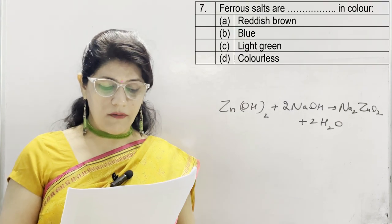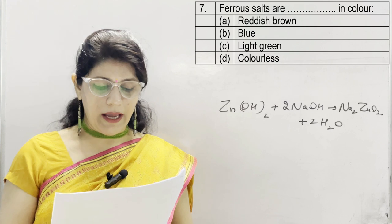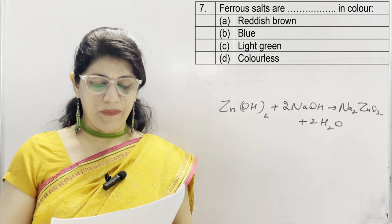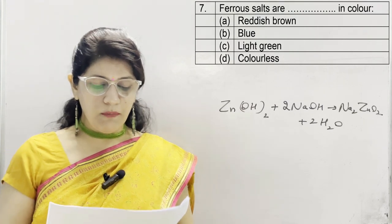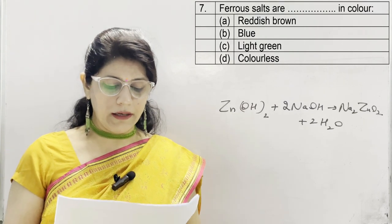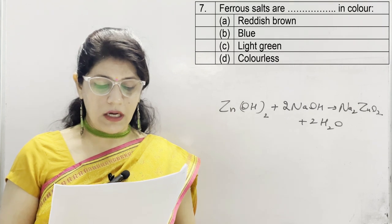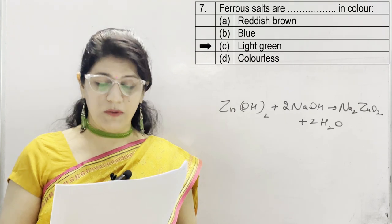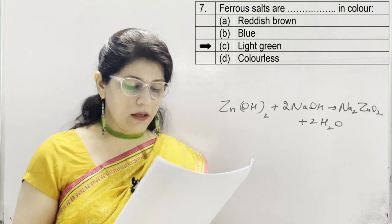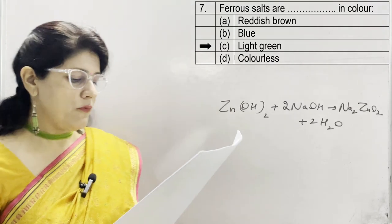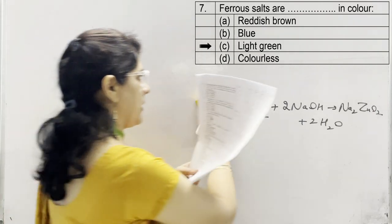In question 7, ferrous salts are dash in color. Options: A reddish brown, B blue, C light green, D colorless. The correct answer is option C — light green. Ferrous salts are light green in color.